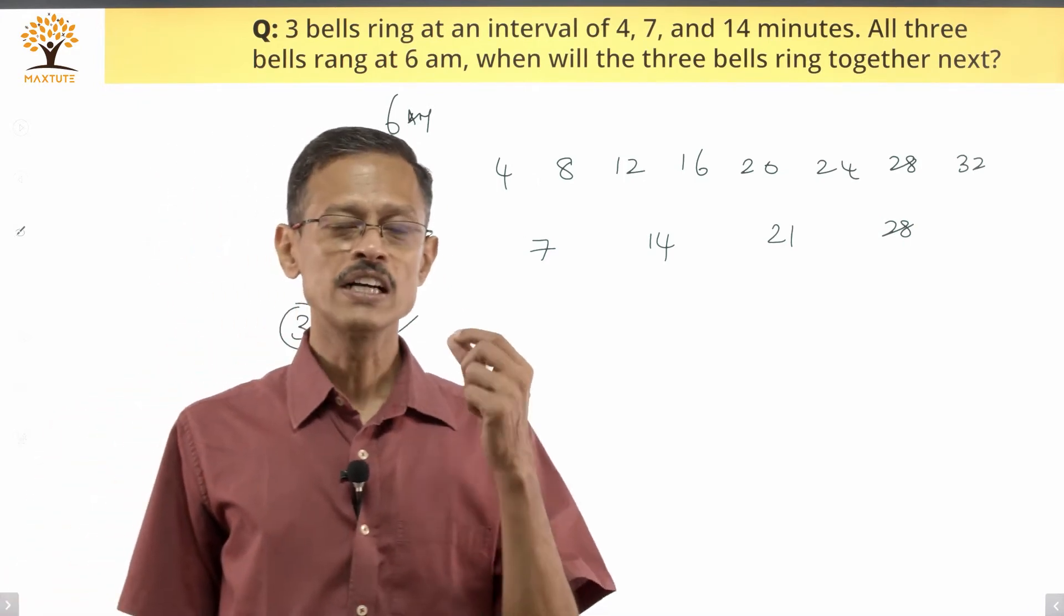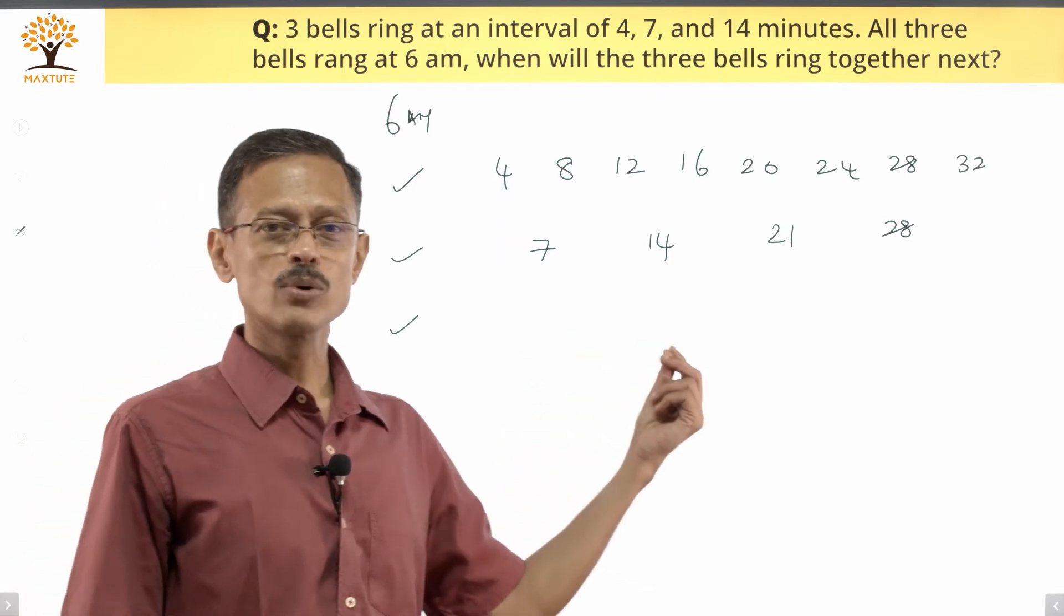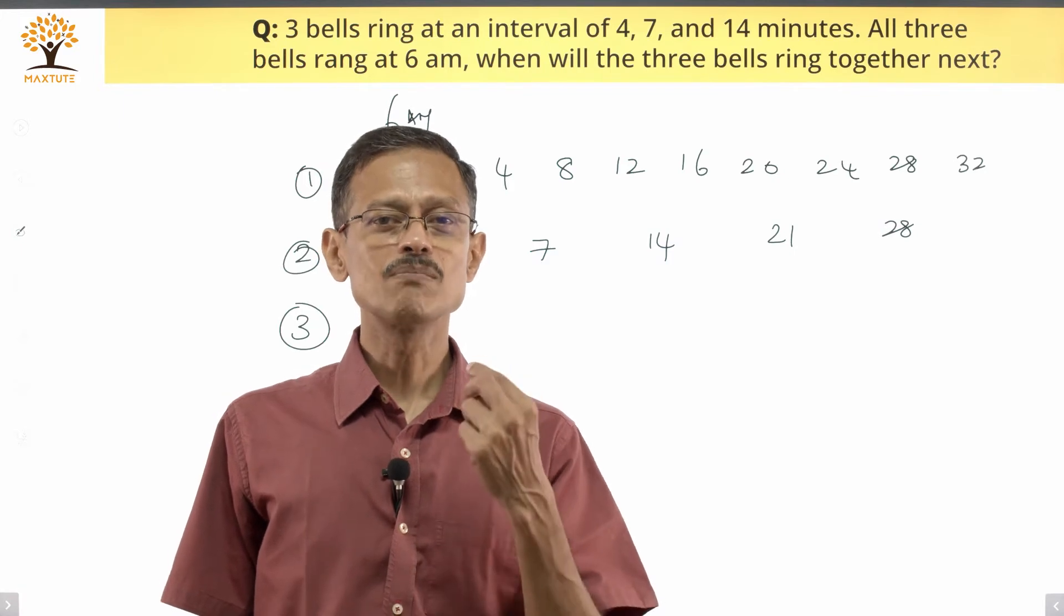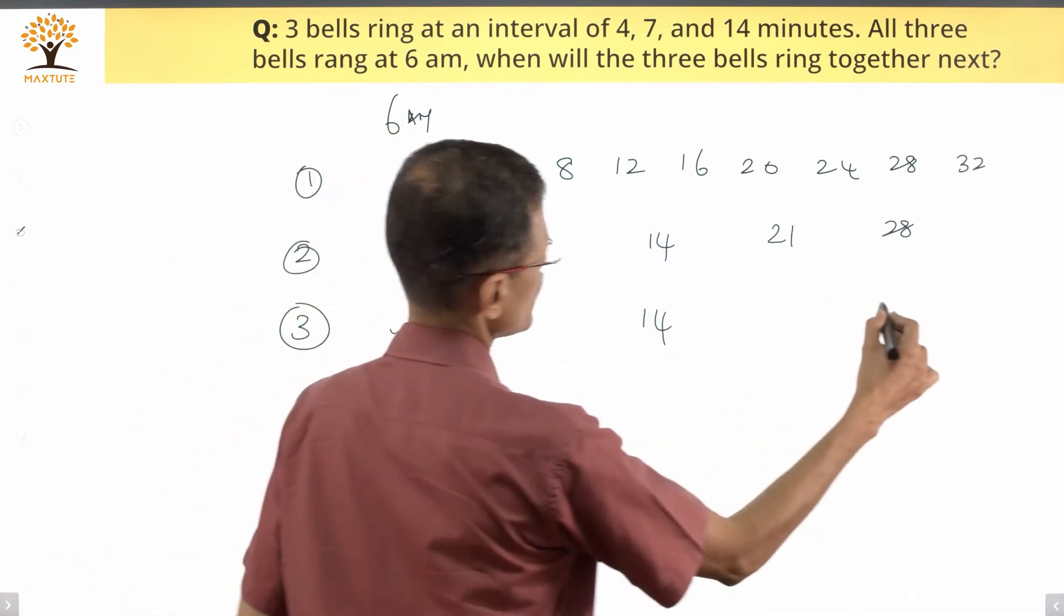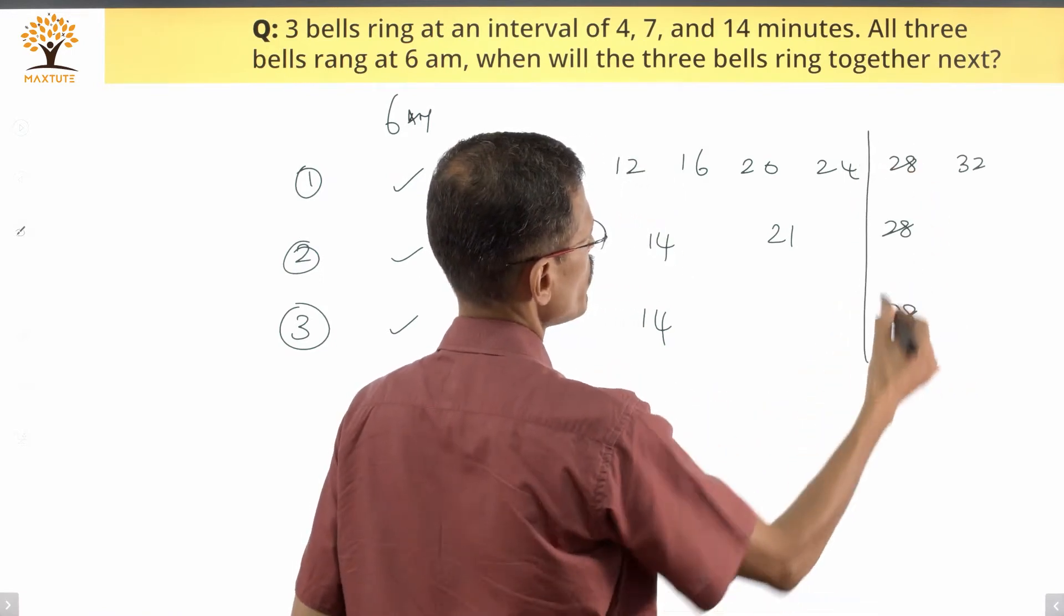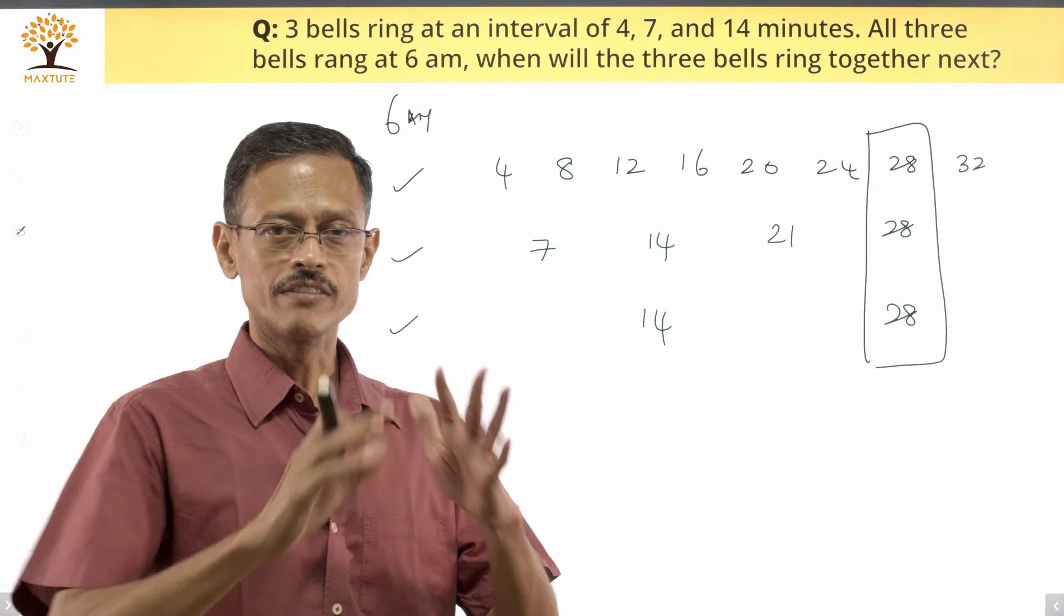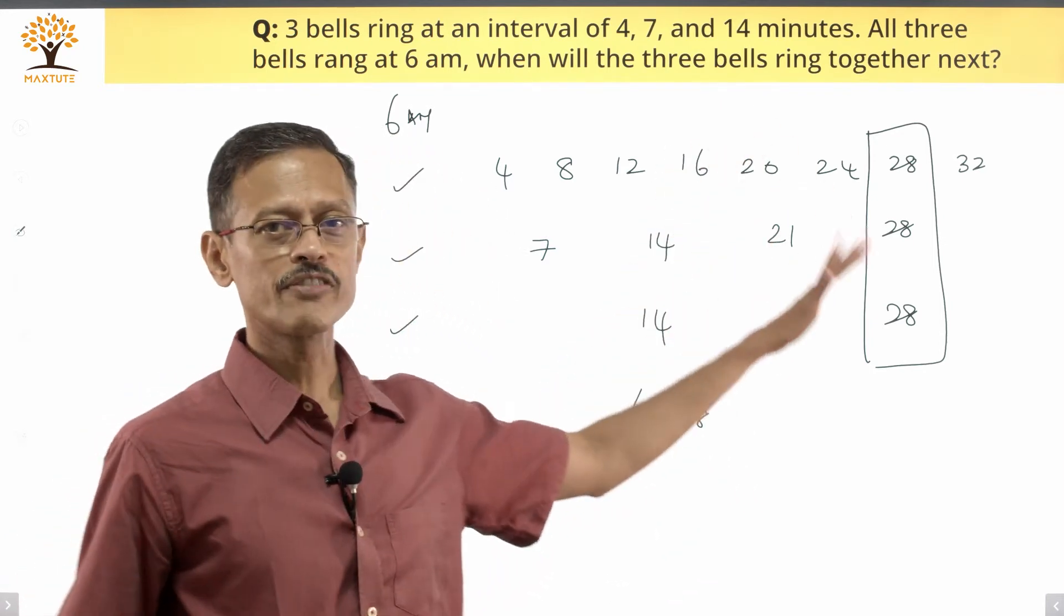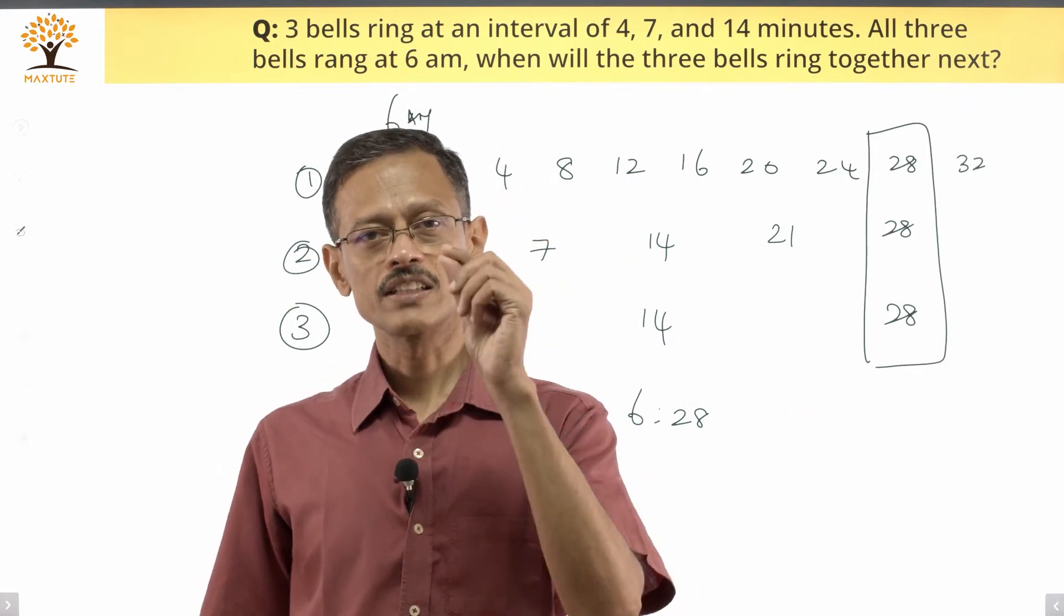Good, but we need to find out when will all three ring together next. The third bell rings at intervals of 14 minutes which means it's going to ring every 14th minute or at time intervals which are multiples of 14. The first multiple of 14 is 14, the second one is 28. We quickly spot that at 6:28 all these three bells are ringing. We have understood this. The answer is obviously 6:28, but this is not going to fetch you marks.